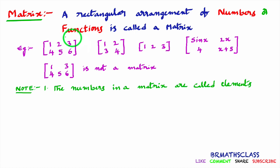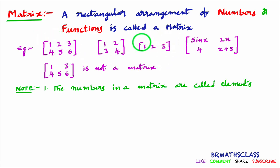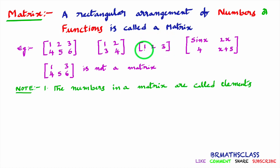Now observe this matrix. In this matrix, how many elements are there? 1, 2, 3, 4, 5, 6 — total 6 elements are there in this matrix. Observe this matrix — in this matrix, how many elements are there? 3 elements are there: 1, 2, 3.